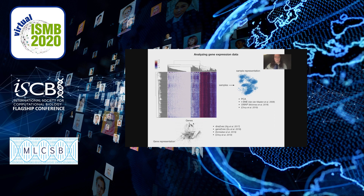Very rarely people do dimensionality reduction on genes, but there are some examples — for example, DNA2Vec and Gene2Vec. Recently, Schreiber and colleagues and Choi have published similar models. My work is very similar to those by Choi, Schreiber, and Du, and it uses tensor factorization to learn two representation spaces simultaneously.